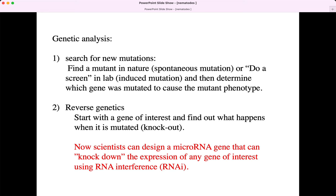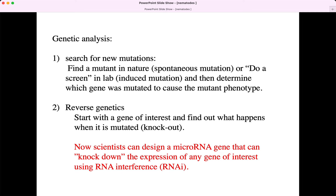In the 1990s none of these genes were known, so scientists had to do traditional genetic screens to identify them. Now today scientists have developed strains of nematode where individual strains knock down each gene in the nematode genome. They're all frozen and you just order them. It's dramatic reverse genetics — people anticipated this need and made knock-down strains of every gene so researchers can just order them.